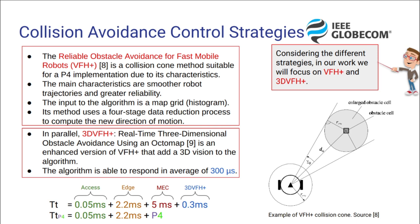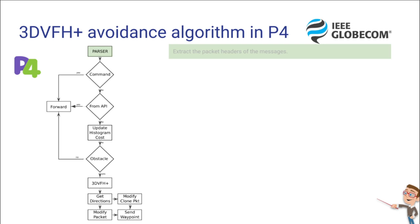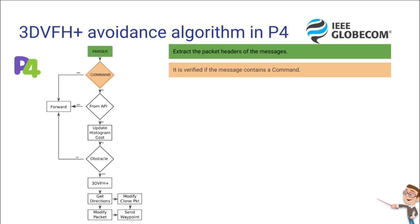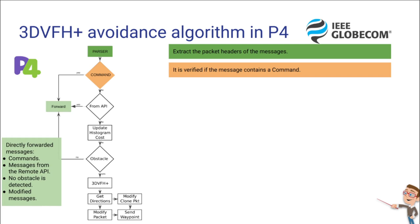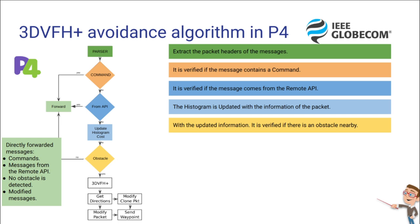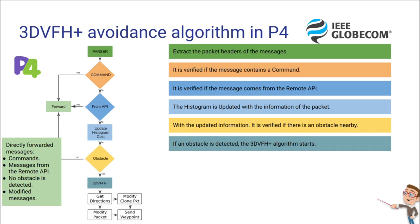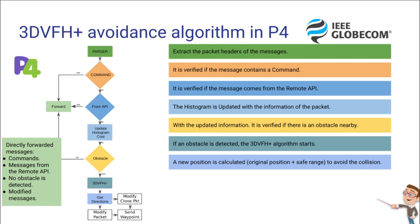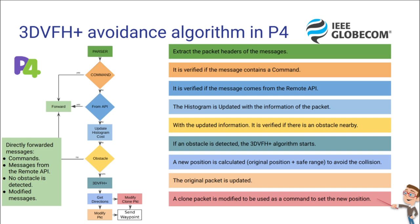This is an overview of our P4 implementation. First, we have a parser that extracts the packet headers of the messages. Then we verify if the message contains a command. If it contains a command, then we directly forward the message. If the verified message comes from the remote API, the histogram updates the information of the packet. With the updated information, it is verified if there is an obstacle nearby. If an obstacle is detected, the algorithm starts, a new position is calculated to avoid a collision, the original packet is updated, a clone packet is modified to use as a command to set a new position, and finally the message is forwarded.